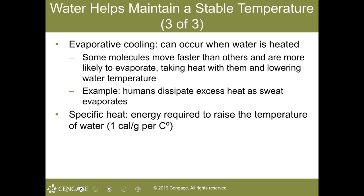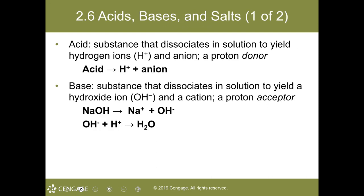Moving on to acids and bases: think of an acid as a substance that dissociates in a solution to yield hydrogen ions and an anion. Acids have a higher hydrogen ion concentration than hydroxide ion concentration.